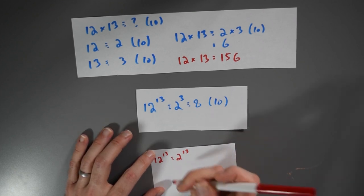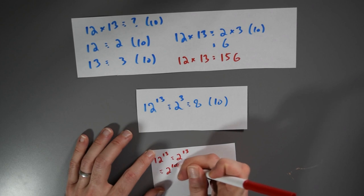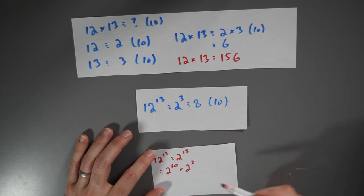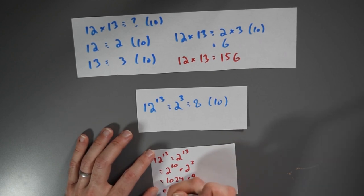I can calculate 2 to the 13th. That's the same as 2 to the 10th times 2 to the 3rd. 2 to the 10th is 1,024. 2 to the 3rd is 8.